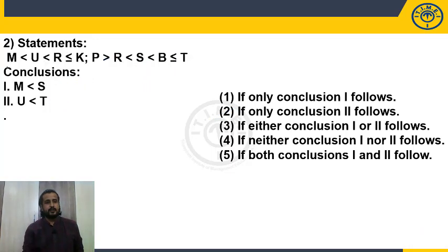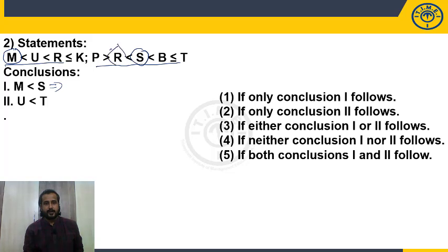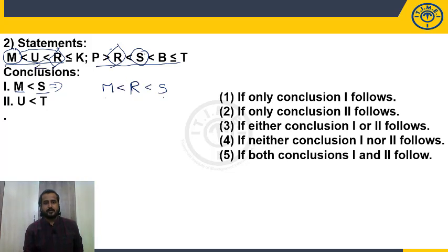Question 2 has two statements. The first conclusion is M < S. M is in one statement, S is in the other. The common element linking them is R. Taking R as the base: M and R — less than, less than, less than — so M < R. R and S — R < S. Less than combined with less than gives less than, so M < S. First conclusion follows.